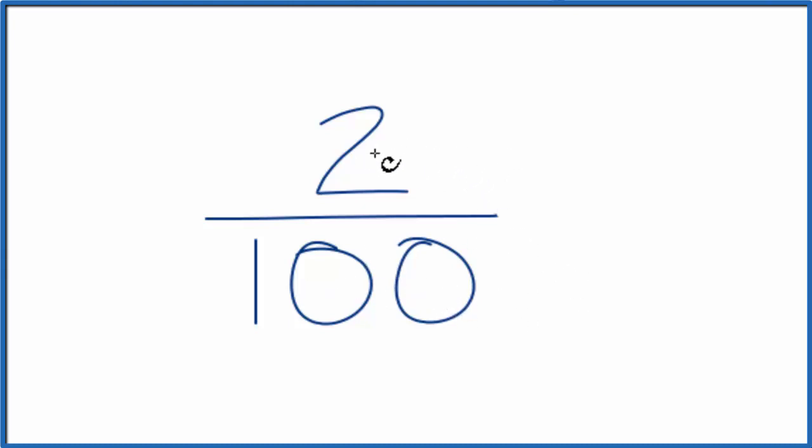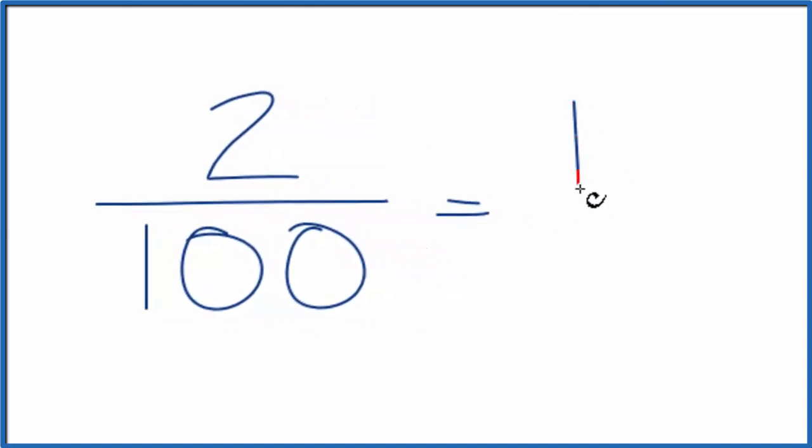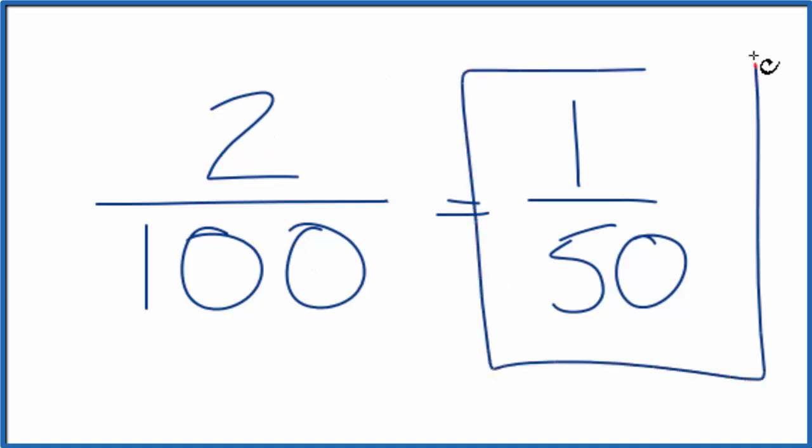If I divide 2 by 2, that gives me 1. If I divide 100 by 2, that's 50. So I can simplify the fraction 2 over 100 to 1 over 50. I can't reduce this any further; this is the lowest form.